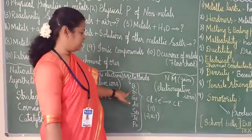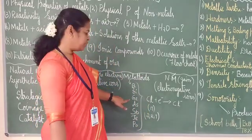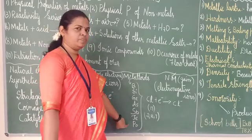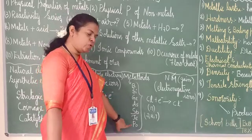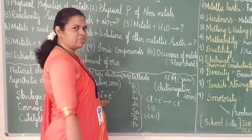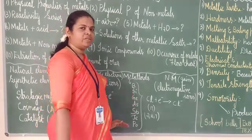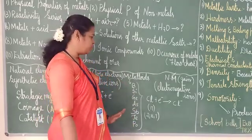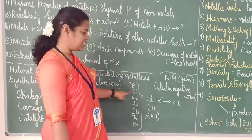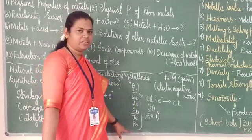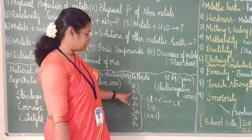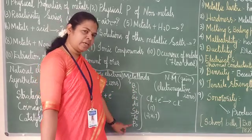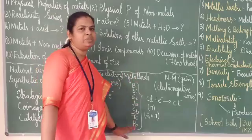The seven metalloids are: boron, silicon, germanium, arsenic, antimony, tellurium, and polonium. There is a debate that polonium should come under metals because it has the characteristic features of metals. But still, seven metalloids are listed. Note their symbols as well — that is also very important.